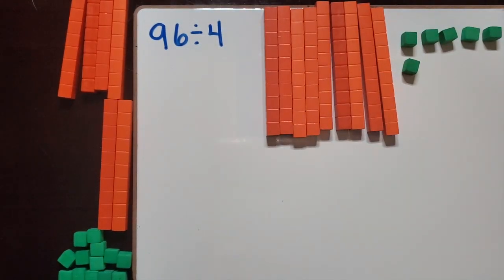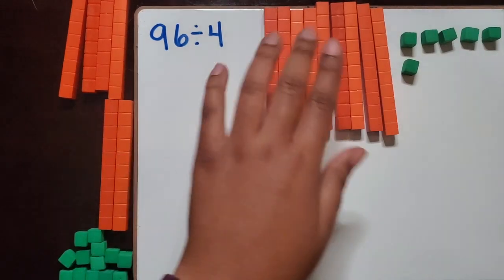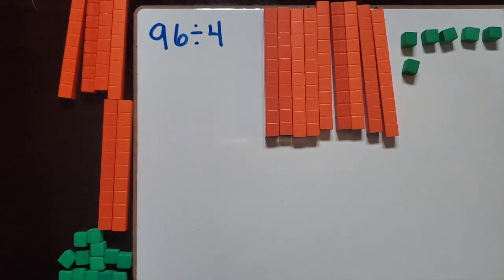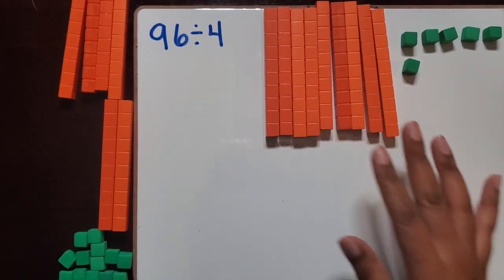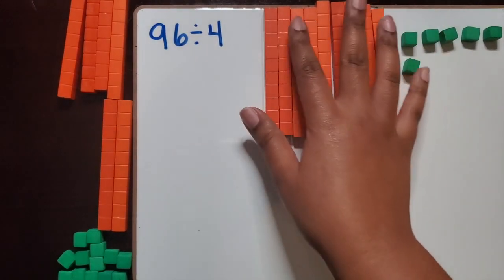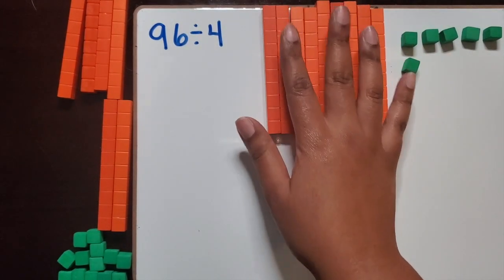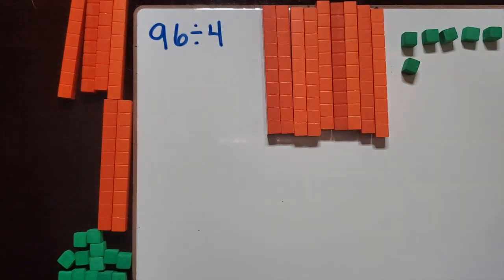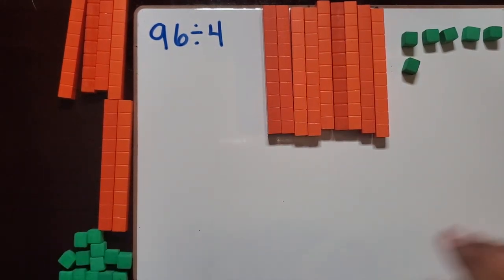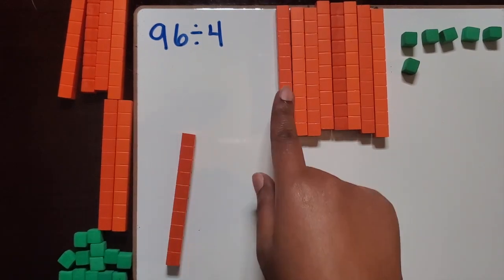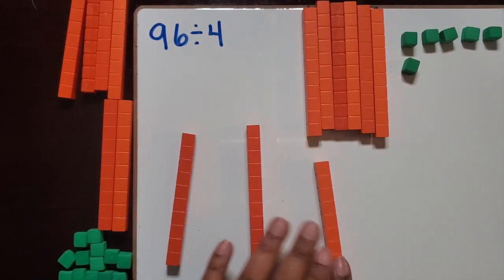So we have our 96. We are going to divide this 96 up into 4 equal groups. I want the students to think about with my tens, do I have enough tens to have an equal amount into 4 groups? We can start out and see what happens by placing one ten in each of those groups.